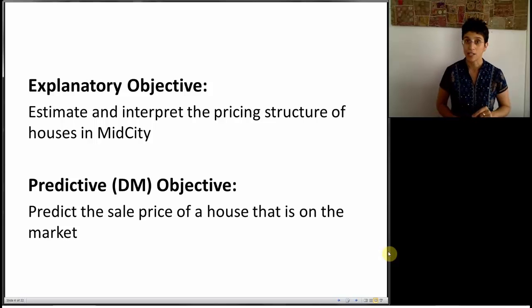Before we talked about an explanatory objective, in particular interpreting the pricing structure of houses in mid-city. We created a statistical model to try and approximate this pricing structure model. In contrast, now we're going into the data mining predictive objective of predicting the sales price of a house that's on the market. Maybe it's a house that just went on the market. Maybe you're the seller and you're debating what the best selling price should be. So with this goal in mind, let's take the linear regression journey.